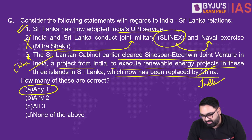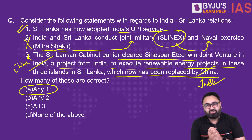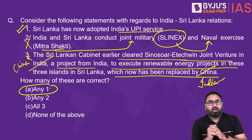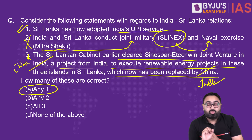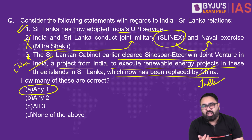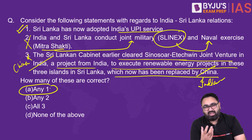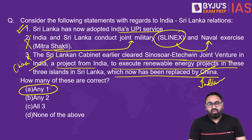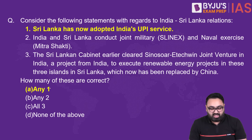Sri Lanka has experienced what friendship with China looks like through debt pressure, and has been going through an economic crisis since COVID-19. India has been helping Sri Lanka with loans and lines of credit. After the Hambantota port episode — where Sri Lanka could not repay China and China took a 99-year lease — Sri Lanka became more circumspect about Chinese intentions and is now more willing to partner with India. The answer is A — only the first statement is correct; second and third are wrong.